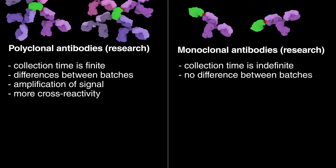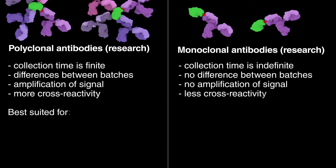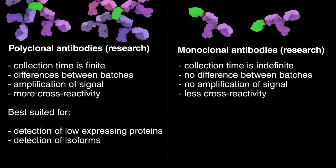Monoclonals, on the other hand, do not amplify detection signals as well, but provide a lower signal-to-noise ratio due to their higher specificity. As a result, polyclonals are better suited for detecting proteins that are expressed at low levels. They are also used to effectively detect different isoforms or versions of a protein or to screen for the presence of the protein of interest in other species.